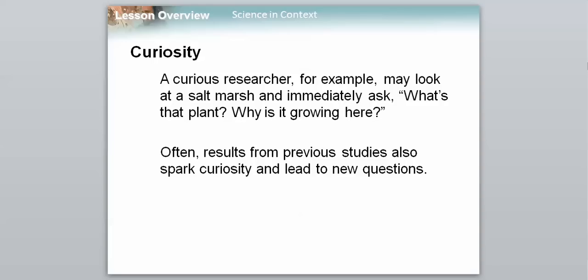So first off is curiosity. A curious researcher, for example, may look at a salt marsh and immediately ask, what's that plant? Why is it growing here? Often, results from previous studies also spark curiosity and lead to new questions. So basically, in order to be successful, you need to not just accept what's going on. You need to dive down into things a little bit more to figure out what is actually going on. Why is this here? That is always the first step, asking why. And then often, instead of just making a direct observation, you're reading an experiment done by another scientist, and maybe you're really curious at how they got a certain set of results. So you're going to look at that result and take a more in-depth look at that specific change or thing that jumps out at you in order to maybe answer a question that no one thought about before. So curiosity is always step one.